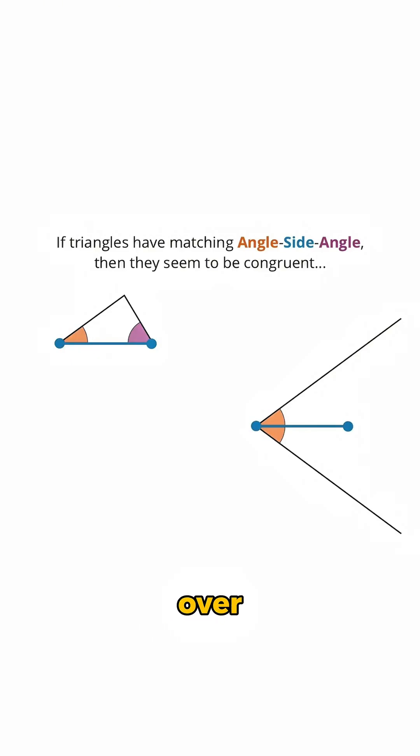Similarly, there are two ways we can have an angle over here with the same measure as this purple angle in our original triangle, above and below.